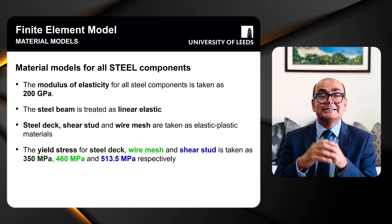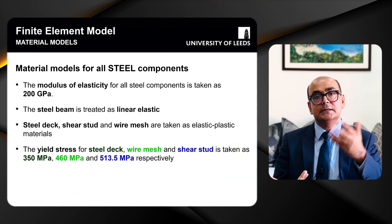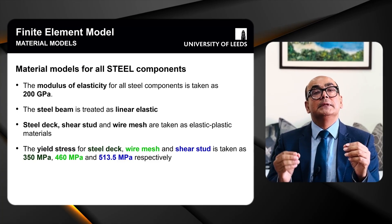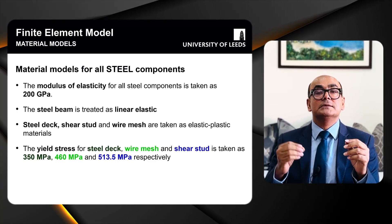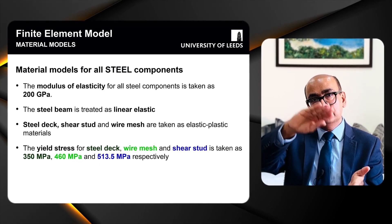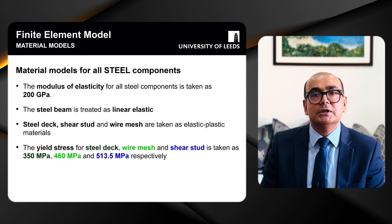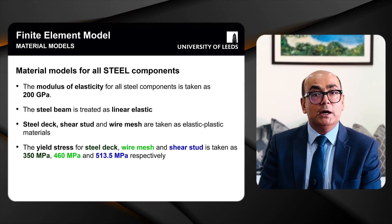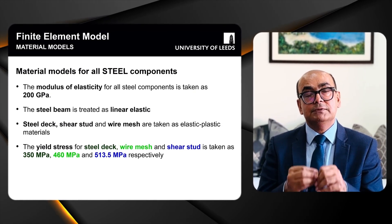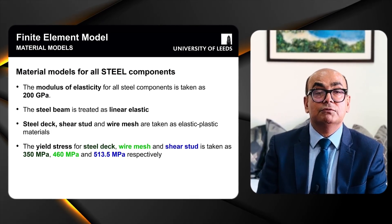For material models, a modulus of elasticity of 200 GPa was used for all steel components. The steel beam was treated as a linear elastic material because its behavior does not significantly affect the results. The steel deck, shear stud, and wire mesh were taken as elastic-plastic materials — the stress-strain curve rises and then becomes perfectly plastic. Yield stresses for the steel deck, wire mesh, and shear stud are 350, 460, and 513.5 MPa respectively, taken from Hicks 2007.